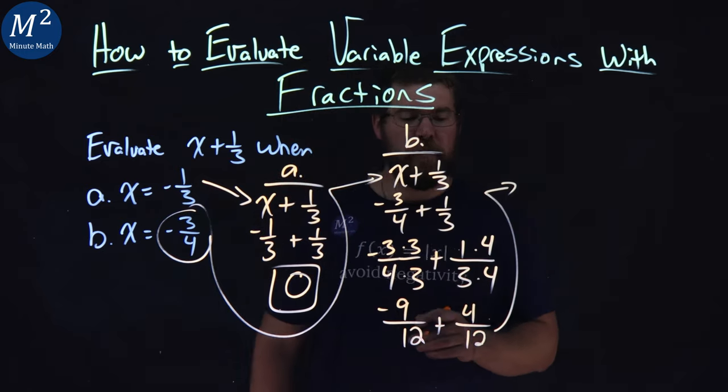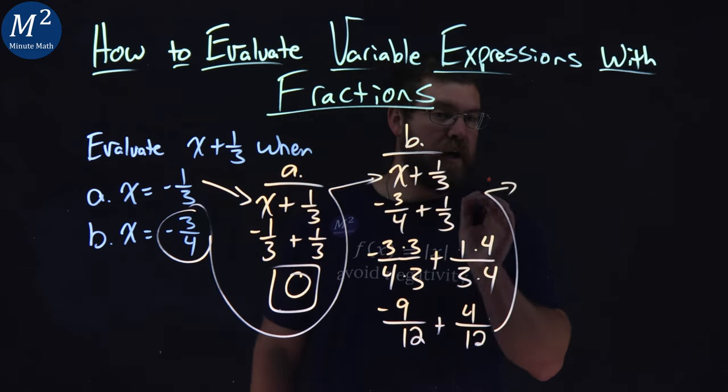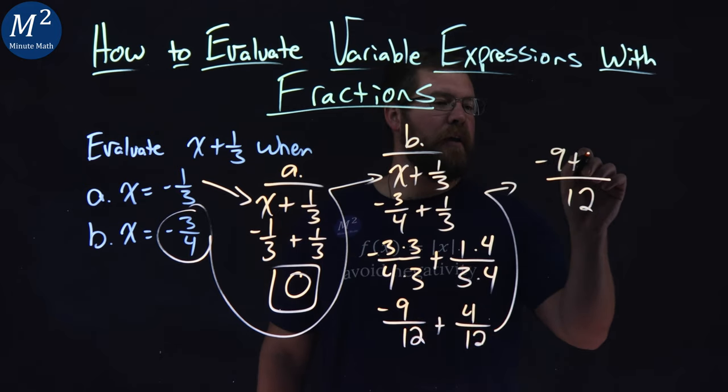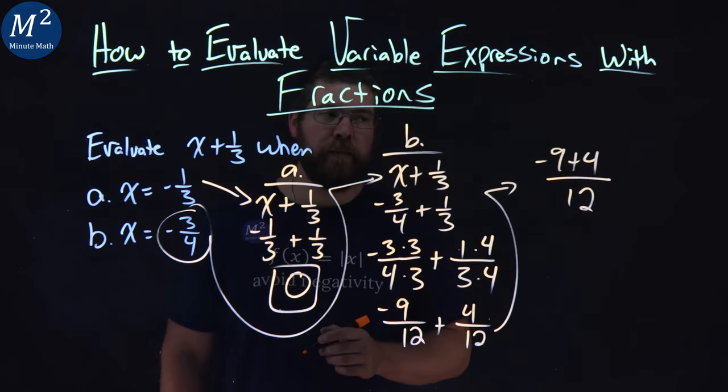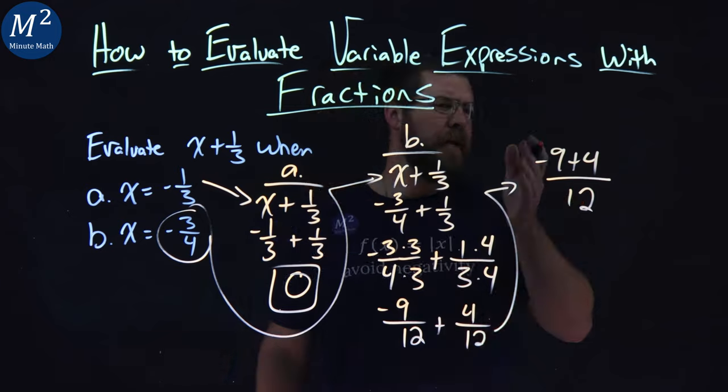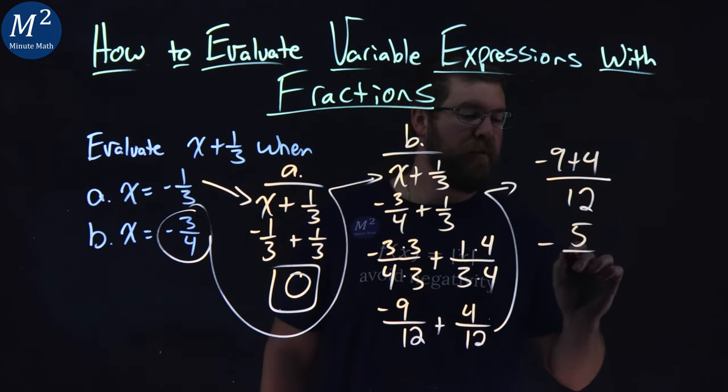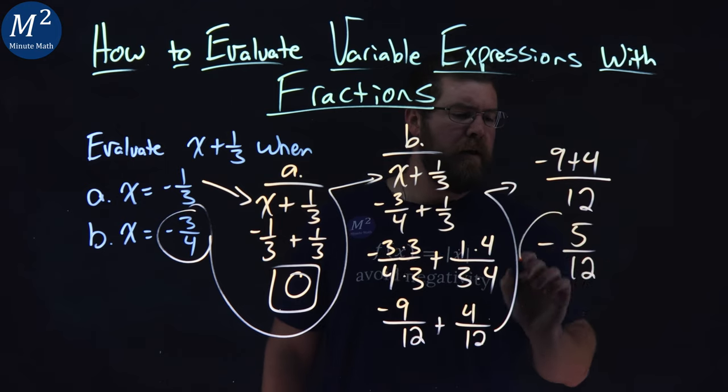Now, negative 9/12 plus 4/12 has a common denominator of 12, and we have negative 9 plus 4 in the numerator. From there, negative 9 plus 4 is negative 5. So we have negative 5/12 left over, and there it is.